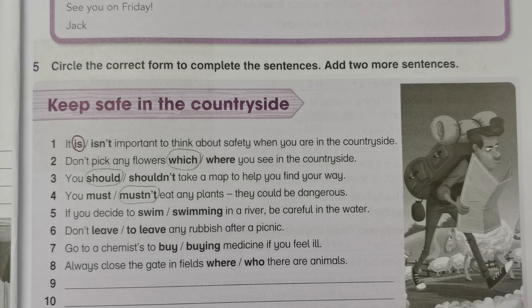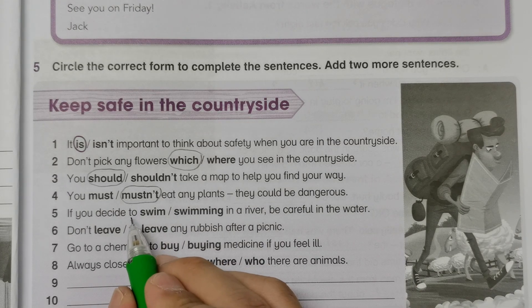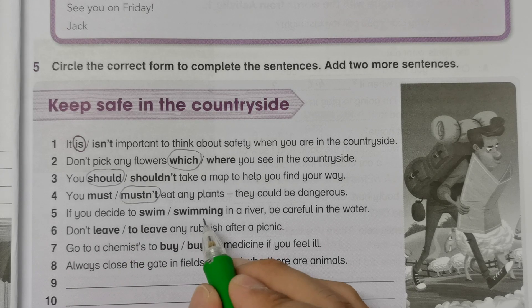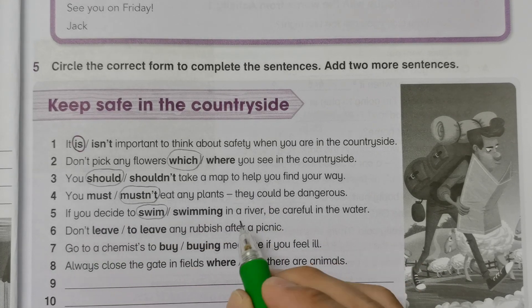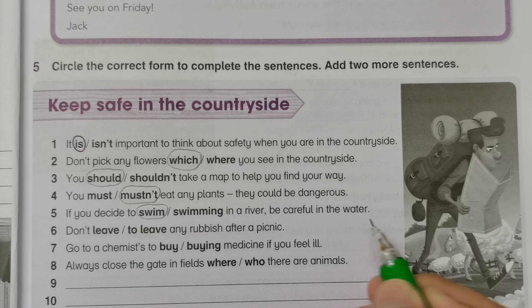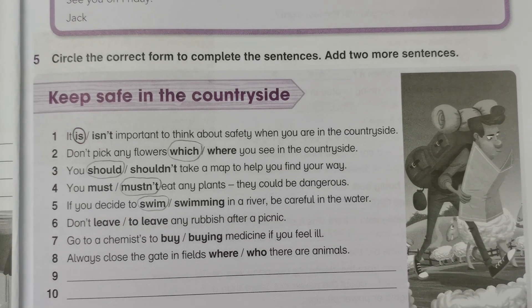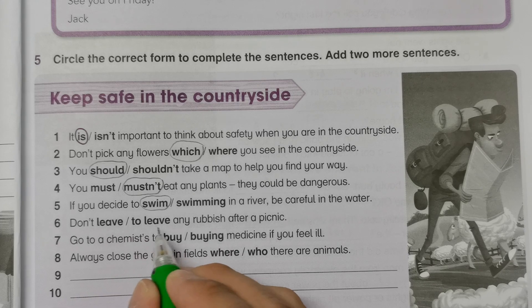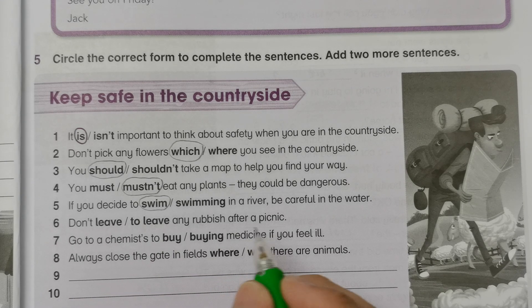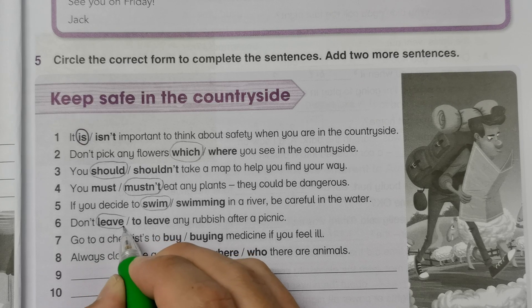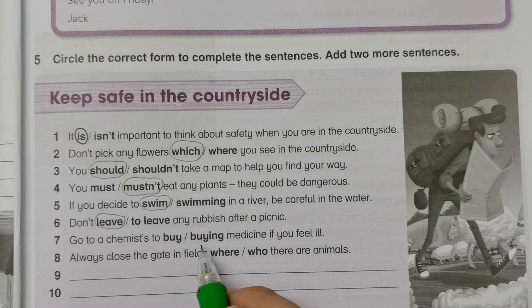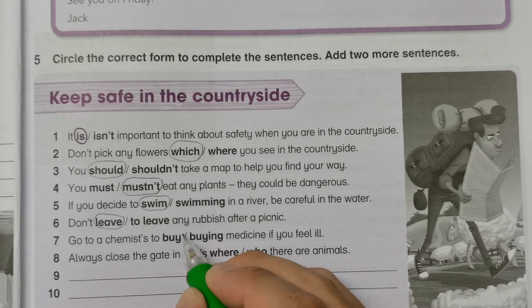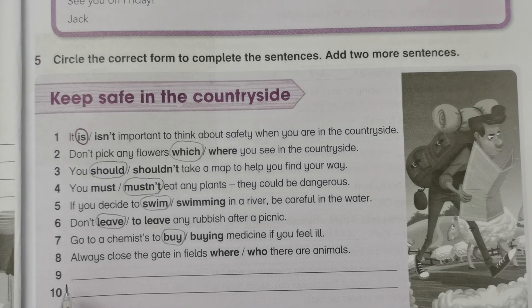Number five: 'If you decide to' — so when in this condition you need to use the base form of the verb instead of the continuous form. So if you decide to swim in the river, be careful in the water. Number six: 'Don't leave or to leave any rubbish after a picnic.' So this one is 'leave'. Number seven: 'Go to a chemist to buy or buying medicine if you feel ill.' So this is 'buy'.